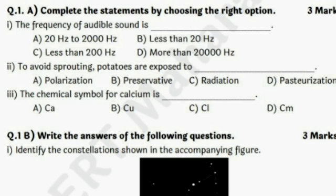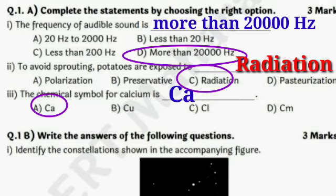Question number 1: complete the statements by choosing the right option. First, the frequency of audible sound is more than 20,000 Hz. Second, to avoid sprouting, potatoes are exposed to radiation. Third, the chemical symbol of calcium is Ca — option one. Students, underline your words while writing fill-in-the-blanks answers.